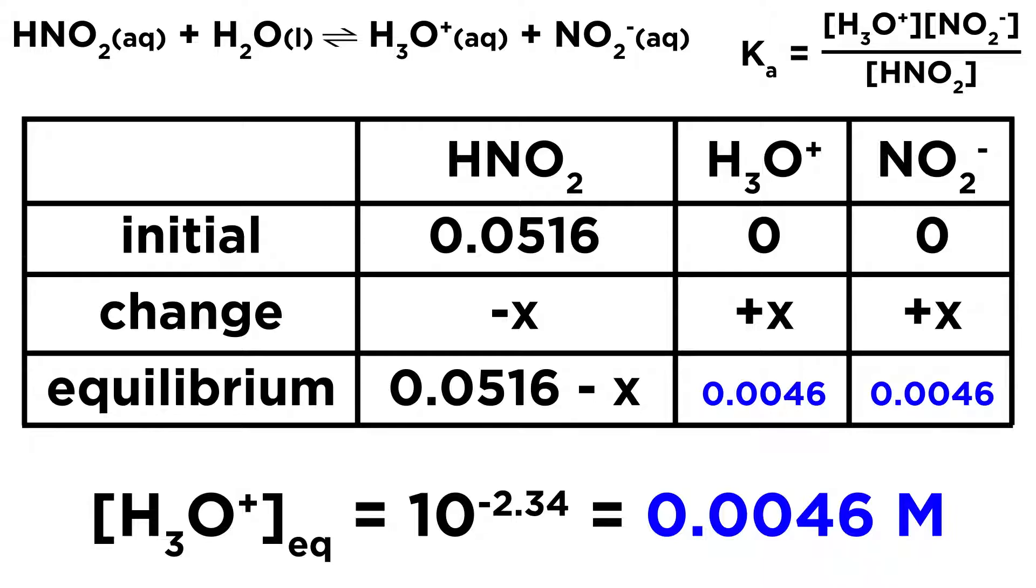And we can therefore put that in anywhere else we see X. That means the nitrite ion concentration is also 0.0046. And then we can get the nitrous acid concentration by taking 0.0516 minus 0.0046, which is 0.047.